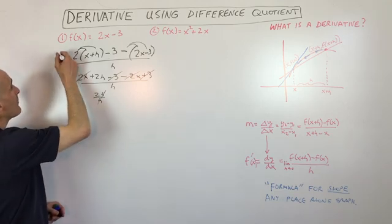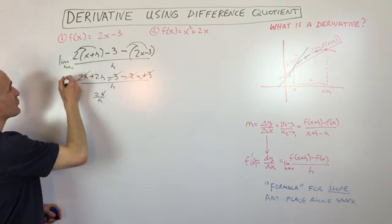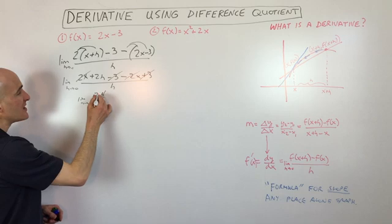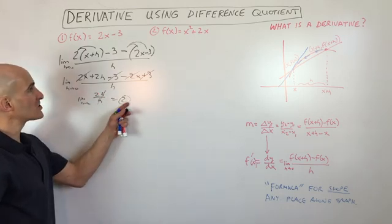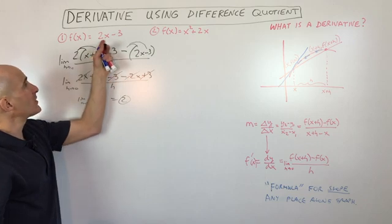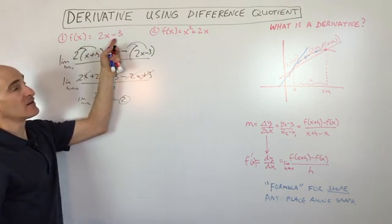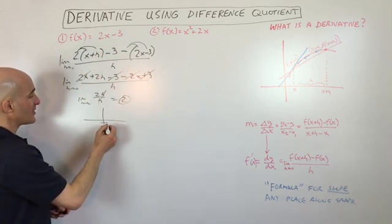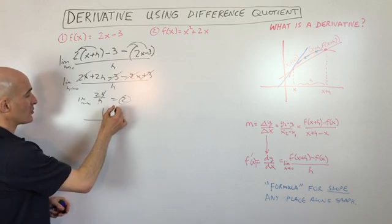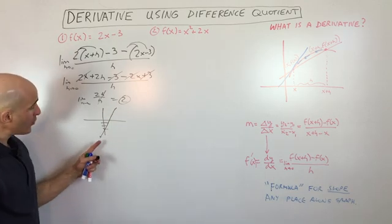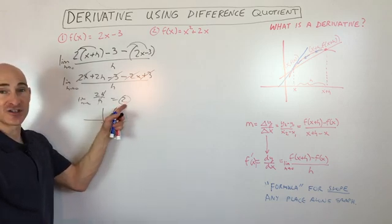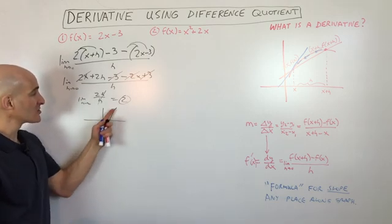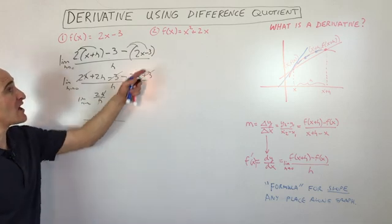The h's cancel, and we're left with just 2. Remember, this is the limit as h approaches zero. So why just 2? If you look at this equation, it's actually the formula for a line — y-intercept of negative 3 and a slope of 2. No matter where you are along this line, the slope is always going to be 2. The difference quotient, the derivative, and the slope all mean the same thing — the slope is always a constant 2.